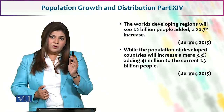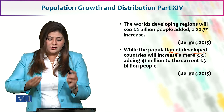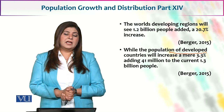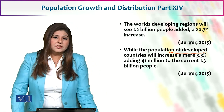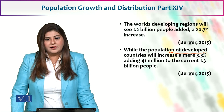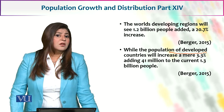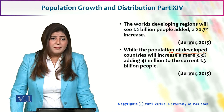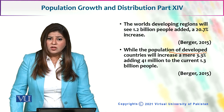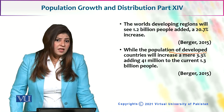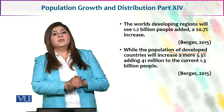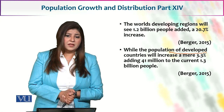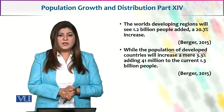Developed regions jo hain woh sirf a mere 3.3% add karenge — roughly 41 million — kyunki birth rate is pretty much very low in countries like Japan, European countries, Germany, England, aur bahut se mumaalik ke andar yeh masail jo hain woh aapko nazar aayenge.